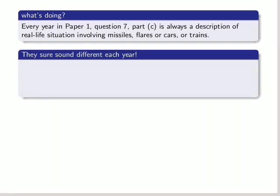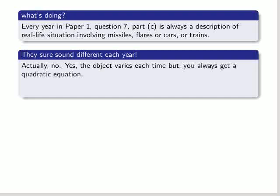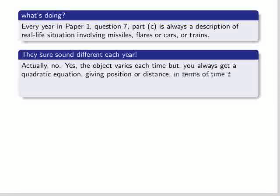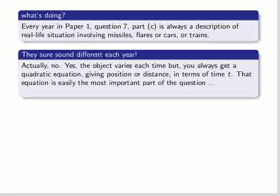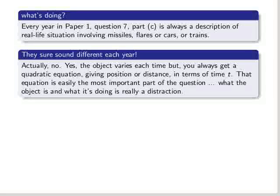They sure sound different each year. Actually, no. Yes, the object varies, missiles, cars, trains, but you always get a quadratic equation, giving position or distance in terms of time t. This equation is easily the most important part of the question. What the object is, and what it's doing, is really a distraction.